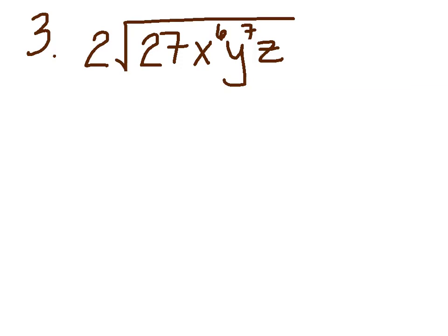Alright, example 3. I've got a 2 out front this time: 2 times the square root of 27x to the 6th, y to the 7th, z. If you're feeling brave and think you've got this down, pause it, try it on your own, and compare with my answer. Remember, this 2 out front is just going to come along for the ride — we're just going to carry that down.